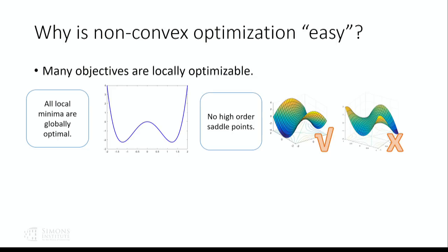Another property required for these functions is that they should not have any high-order saddle points. Every saddle point of the objective function should have zero gradient and a Hessian matrix whose smallest eigenvalue is strictly smaller than zero, so if you follow the negative eigendirection, the function value decreases. We don't want cases where a point has zero gradient and also zero Hessian — those are called high-order saddle points — and we assume the objectives do not have these.